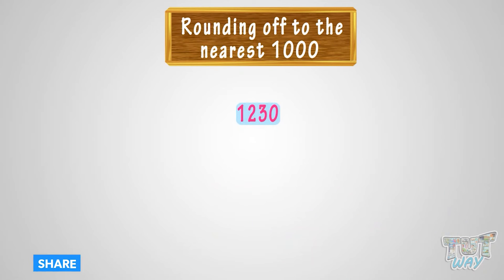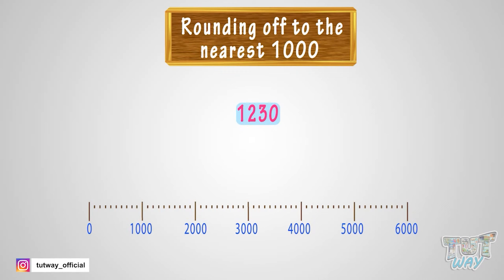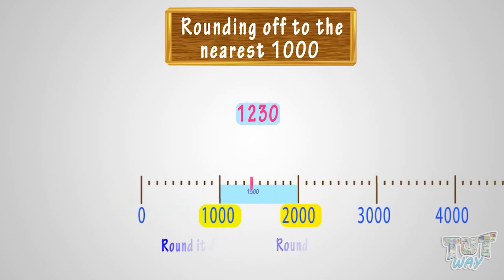Now let's take another example, 1,230. We have to round 1,230 to the nearest 1,000. See the number line. Where can you fit 1,230 on this number line? It is somewhere between 1,000 and 2,000. As 1,230 is below or before the 500 mark, so we will round it down to 1,000.